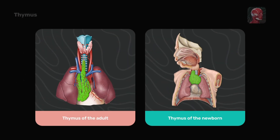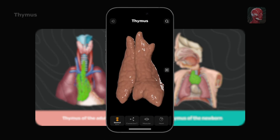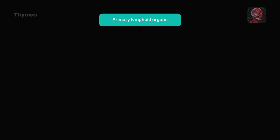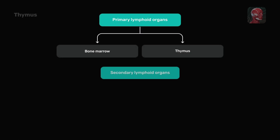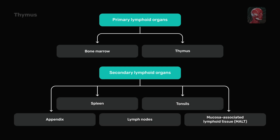In this video, we are going to discuss the anatomy and function of the thymus. The thymus is a primary lymphoid organ located in the mediastinum behind the sternum. It is responsible for producing T-cells by maturing thymocytes.